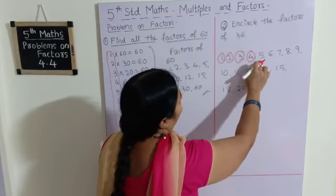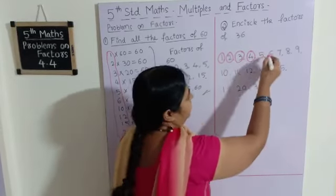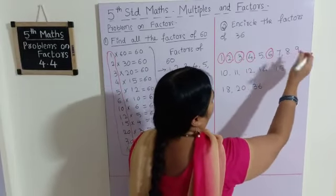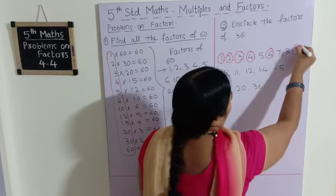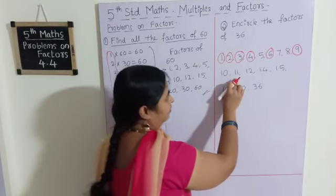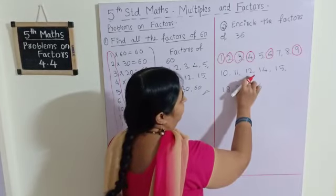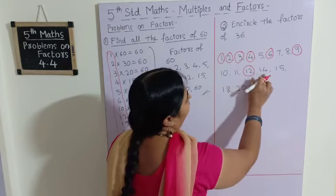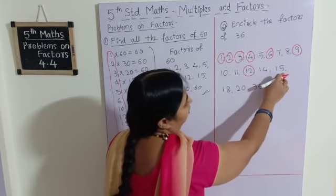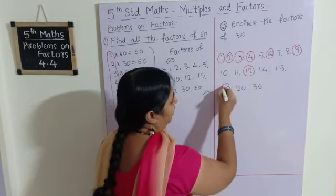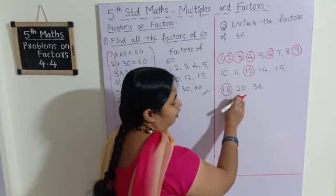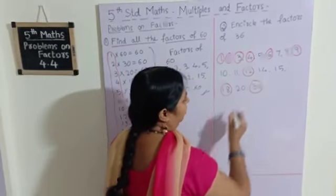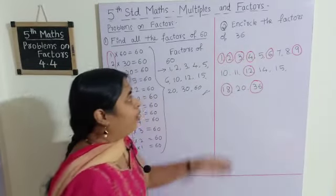In the table of 3, 3 twelves are 36. In the table of 4, 4 nines are 36. In the table of 5 we don't find 36. In the table of 6, 6 sixes are 36. In tables of 7 and 8, no. In the table of 9, 9 fours are 36. In tables of 10, 11 we don't find it. In the table of 12, 12 threes are 36. Tables of 14 and 15 we don't find. In the table of 18, 18 twos are 36. Table of 20, we don't find 36. And 36 itself is the greatest factor. So we have encircled all the factors of 36.